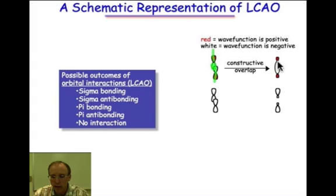The result, a bonding interaction, a σ-bonding interaction, means that there's an enhancement of electron density, enhancement of wave function, enhancement of electron density in between the two nuclei. The bonding interaction results from constructive overlap.